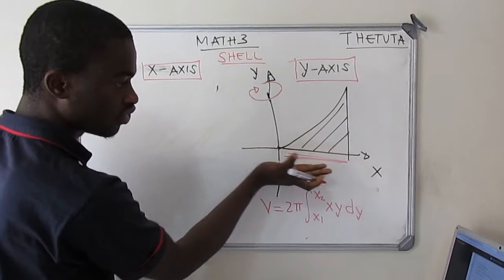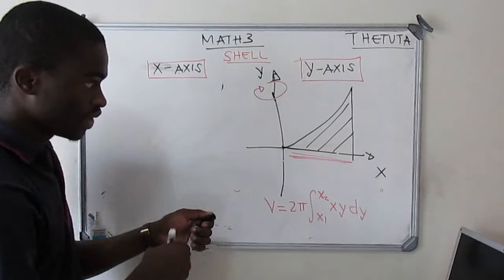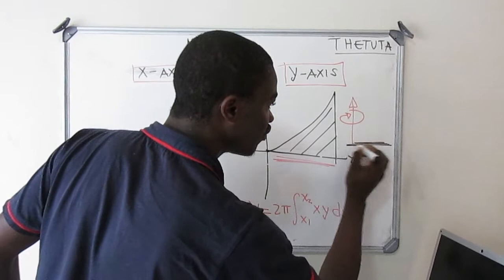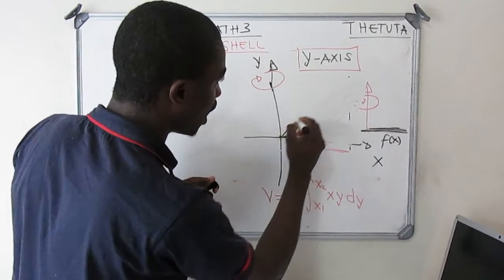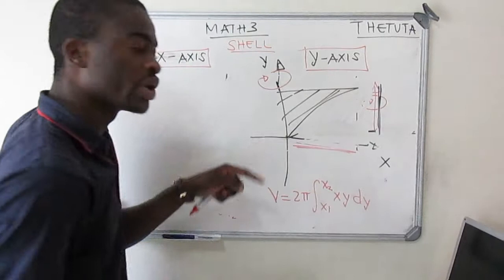The body must be revolved on the x-axis while rotating on the y-axis for you to apply shell method. If your body is rotating on the y-axis but the function of x is revolved on the x-axis, you can apply shell method. But in the case where the body is rotating on the y-axis and our function is also on the y-axis, you cannot apply shell method — you have to apply the disk method.